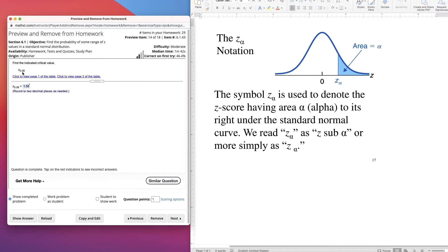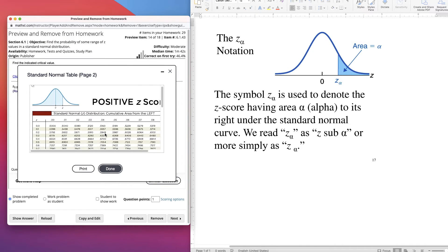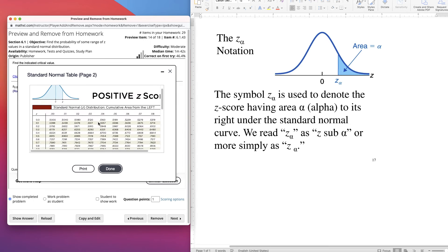Here's an example, z sub 0.06. There's a few ways of doing it. You can find the table and find the area of 0.06 to the right. Keep in mind that the area found on this table is the area to the left. That's what this is. See, the z and the area to the left.